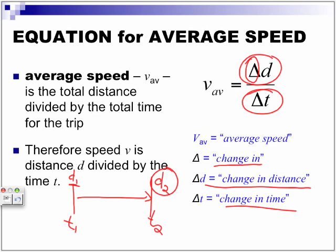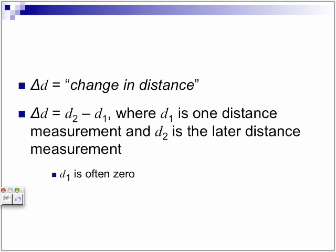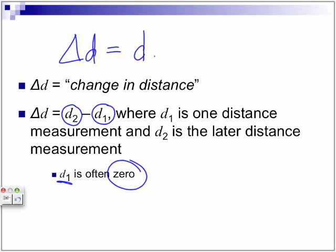And most of the time, our initial units are going to be at zero. So, delta d is equal to the change in distance. So, delta d is equivalent to taking our second distance, our final distance, and subtracting it by our initial distance. So, d1 is one distance measurement, d2 is the later distance measurement. And as we said before, d1 is often zero. So, our delta d is really our final distance subtracted by whatever distance we initially started with. So, we're going to take our final, subtract it by our initial.